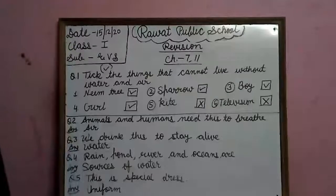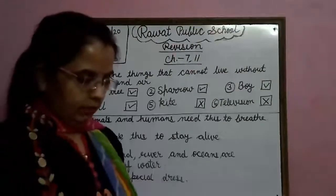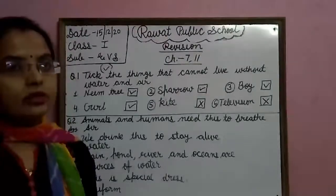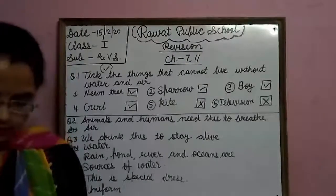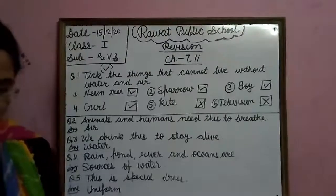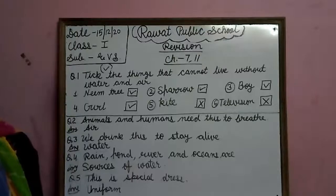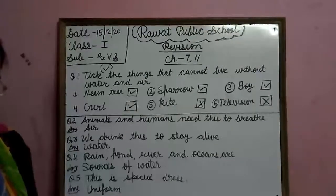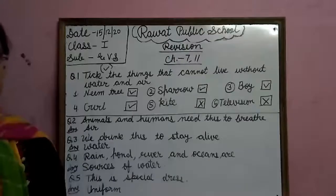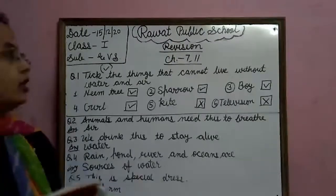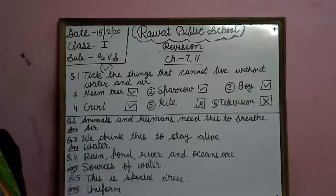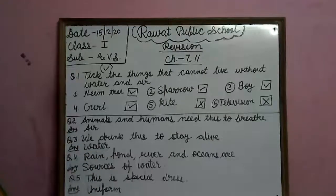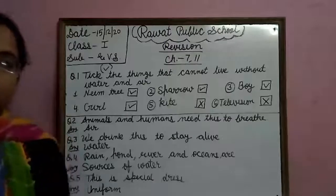Write four uses of plants. Number 1: plants give us fruits, vegetables, and flowers. Number 2: we get cotton from cotton plants. Number 3: we get wood to make furniture from trees. Number 4: plants give us useful medicines. So these are the uses of plants. Plants are very useful for us. Children, best of luck for your third test exam. Thank you.